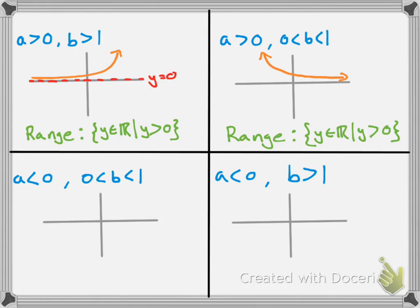The third case looks like an exponential decreasing graph but reflected. It approaches the asymptote from below this time. Since everything is below the x-axis, we have only negative y values, and so the range is y as an element of the real numbers such that y is less than 0.